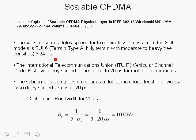However, the ITU has a vehicle channel model B that shows the delay spread can vary all the way up to 20 microseconds in a mobile environment. So let's take the ITU 20 microseconds RMS delay spread as our reference value.